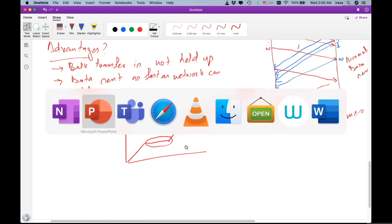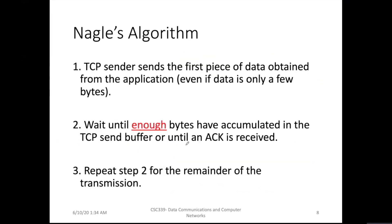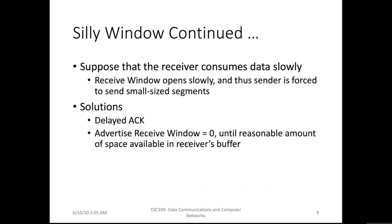Coming back to our slide set: the second problem with the flow control mechanism is where the TCP sender sends a very small amount of data. The solution is Nagle's algorithm, where the sender sends the first piece of data regardless of its size. Then we wait for enough bytes to be accumulated in the sender buffer — half of the sender window, or half of the maximum segment size, or until an acknowledgement is received — and we repeat this step until communication is done.